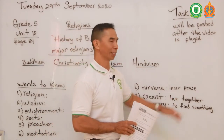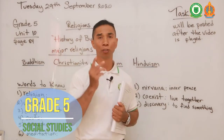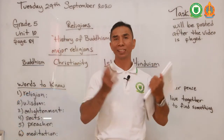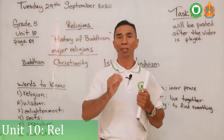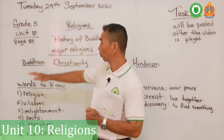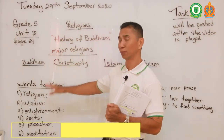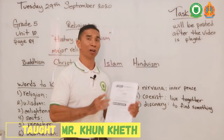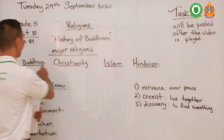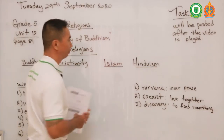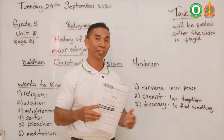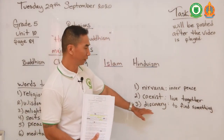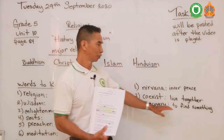My second word is 'coexist.' Coexist means to live together. For example, you, your mom, your dad, your brothers, or your sisters all coexist inside a house when you all live together. As for our religions — most of these religions and their sects coexist together. So Buddhism, Christianity, Islam, and Hinduism all coexist within this world; we all live together.